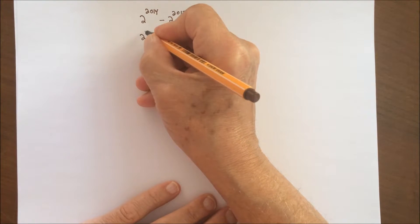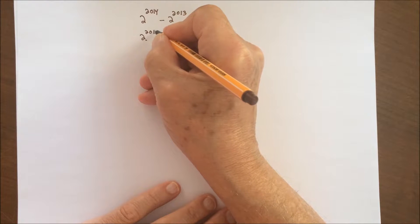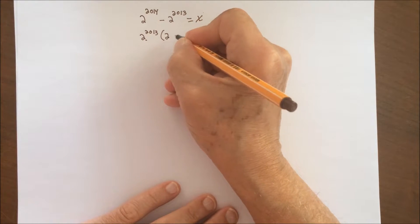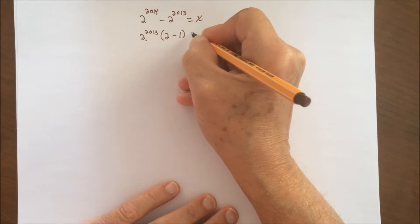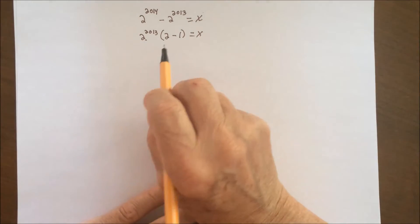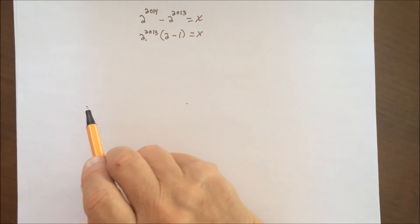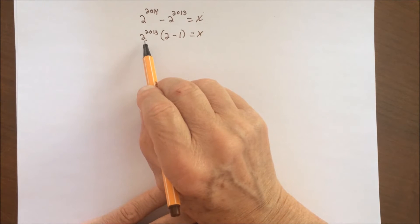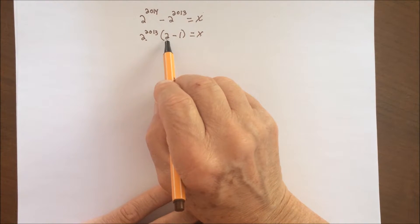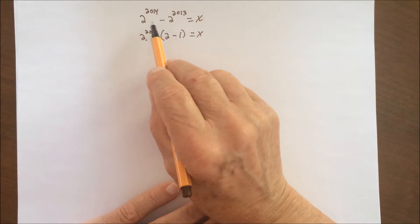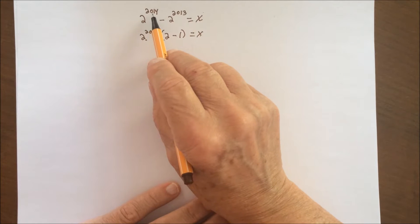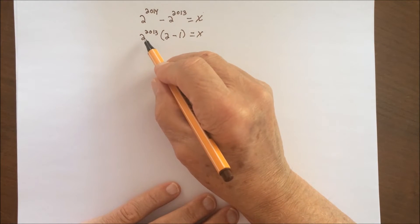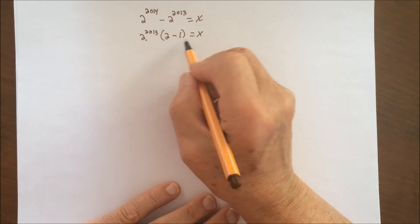2 to the 2.013 times the quantity (2 minus 1) equals x. Let's see why. We use a law of exponents: 2 to the 2.013 times 2 is 2 to the 2.014, minus 2 to the 2.013.